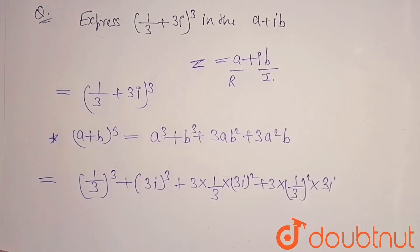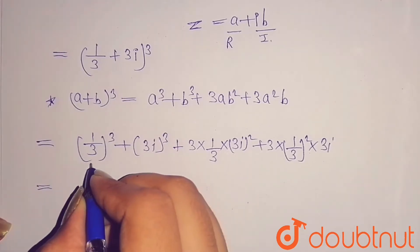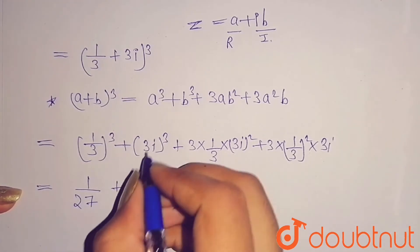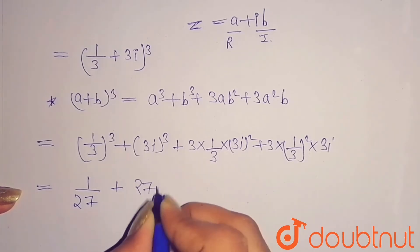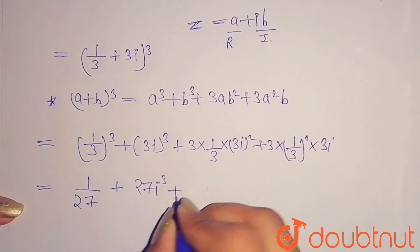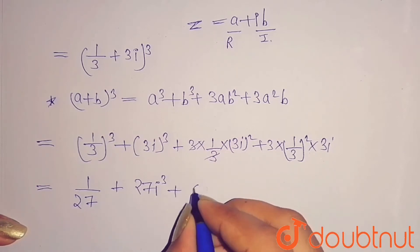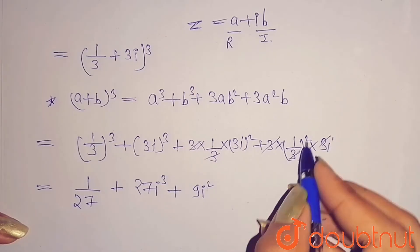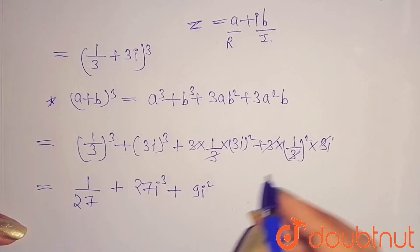So here when you multiply 3 three times, you will get 1/27 plus this will be 27i³ plus 3 and 3 will cancel, this will be 9i². 1/3 will cancel from this and the other 3 will cancel this because it is square, so 2 threes. You are just getting i.